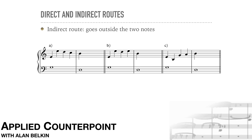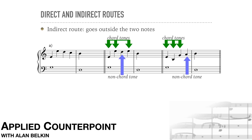As in second species, there will be no leaps to or from dissonances, but the fact that we have four notes per bar means that passing notes and neighbor notes can both appear in the same bar. Occasionally, three of the chord tones will appear within one bar, but at least one note in each bar should be a non-chord tone. Pure arpeggio figuration is more typical of instrumental writing.